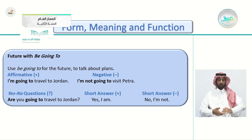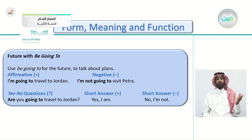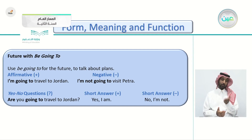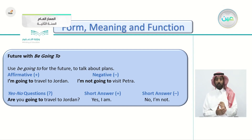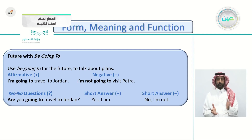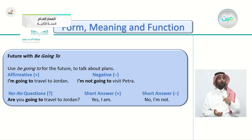'Be going to' — where 'be' means am, is, or are. We use 'be going to' for the future to talk about plans. The affirmative form: 'I'm going to travel to Jordan.' So: I + am + going to + verb. The negative form: 'I'm not going to visit Petra.' You put the word 'not' before 'going.'